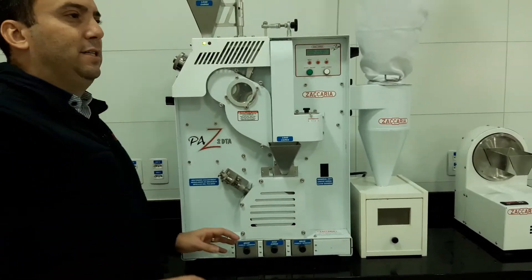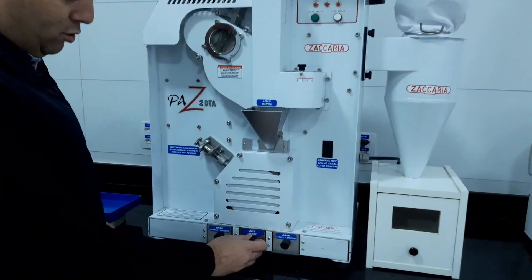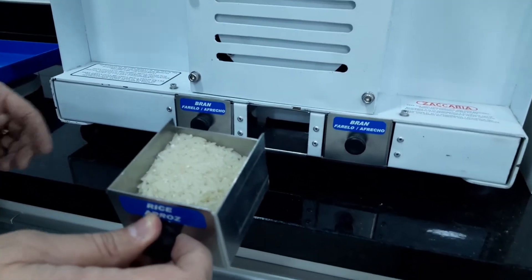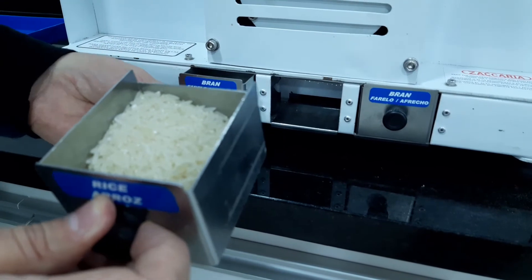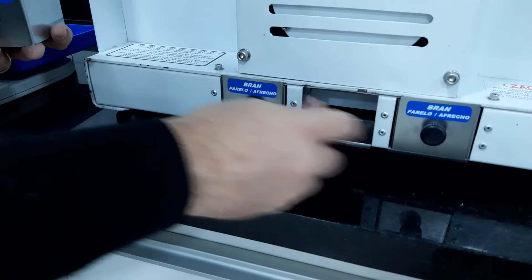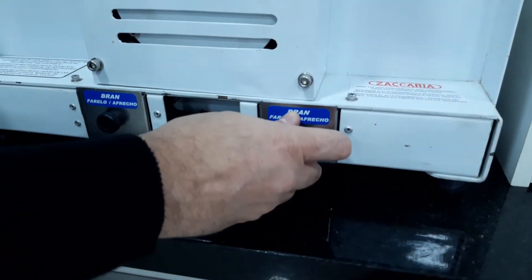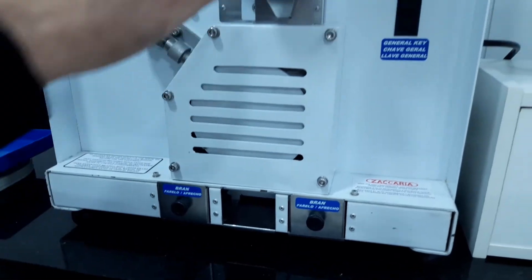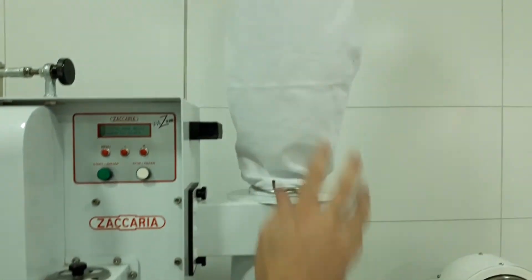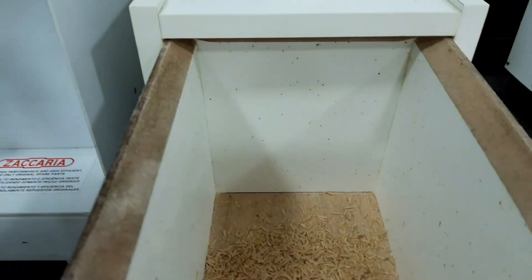So after 75 seconds the machine will stop by itself. From this compartment we will have the white rice, and from those compartments here we will have bran. All the husk and dust will be aspirated by the cyclone filter and collected inside here.